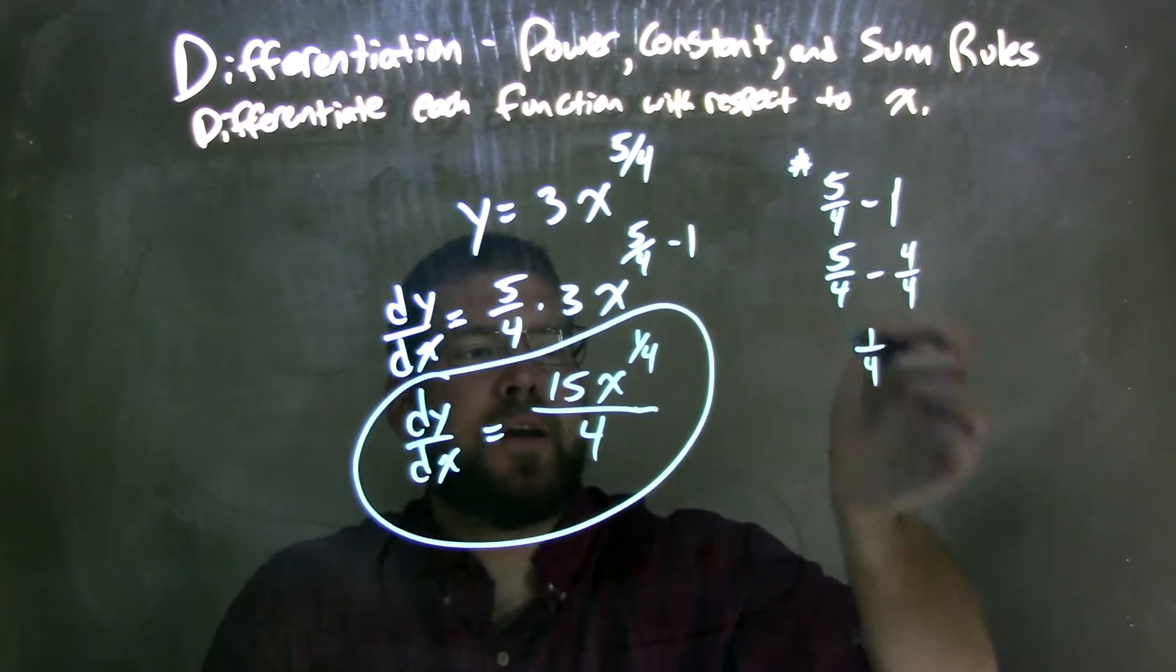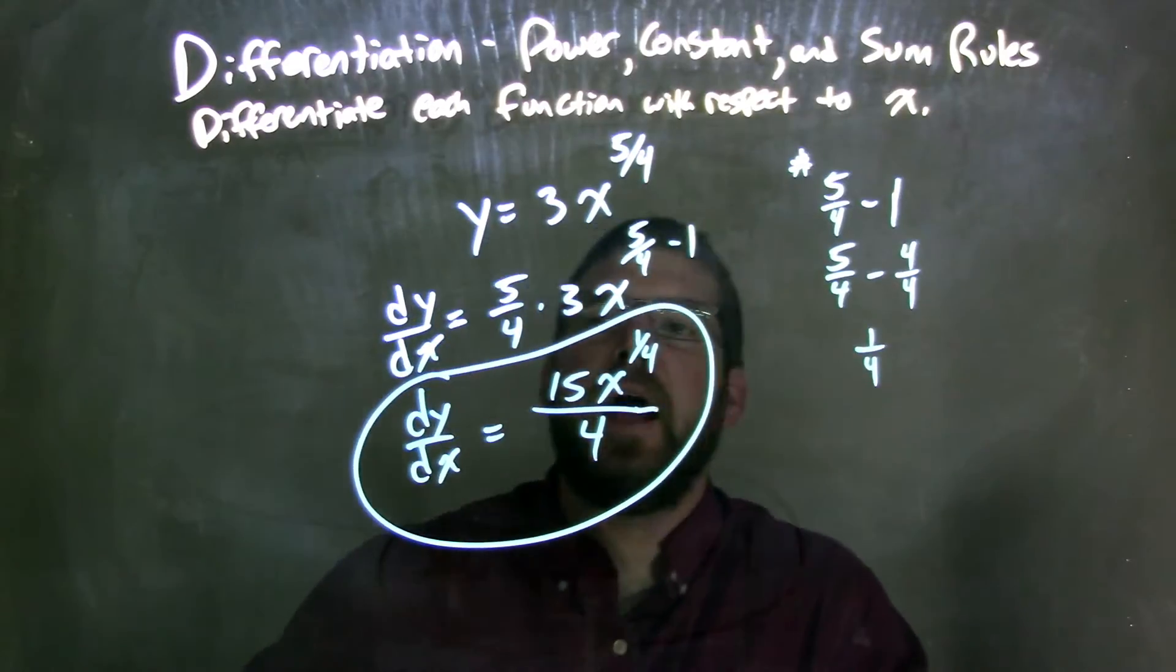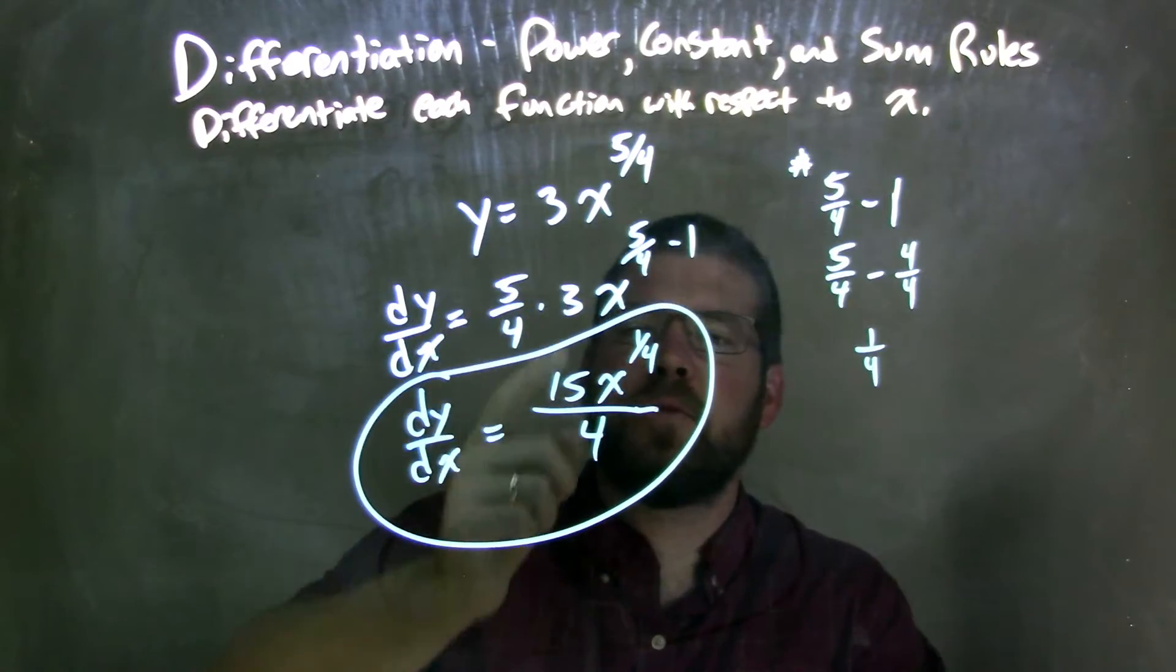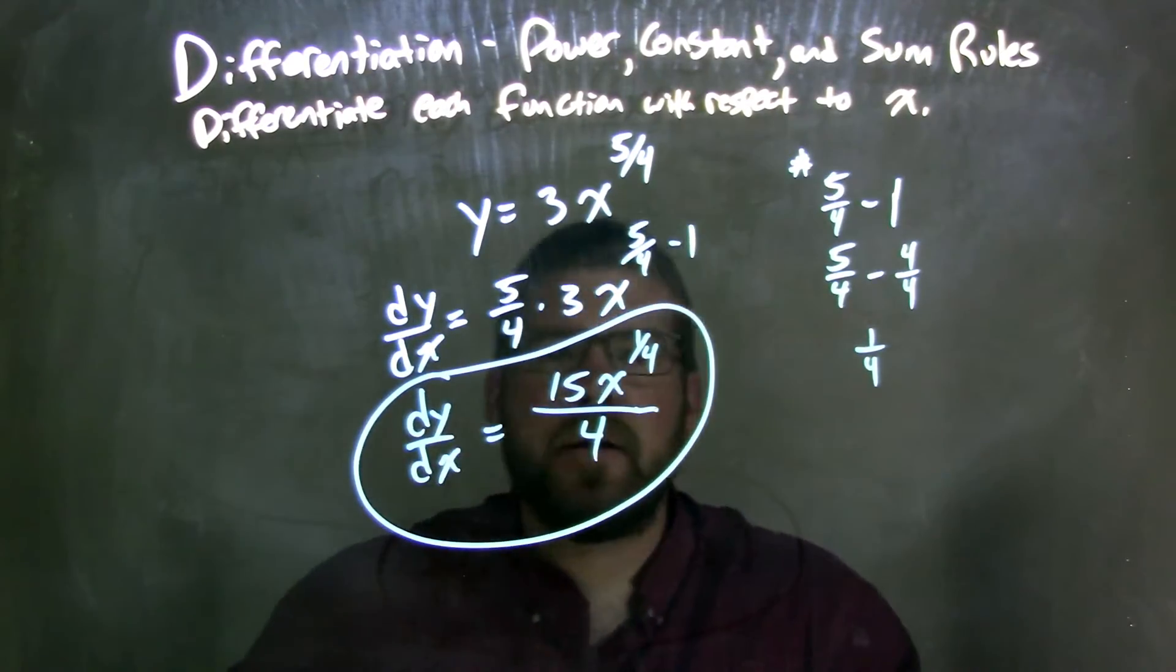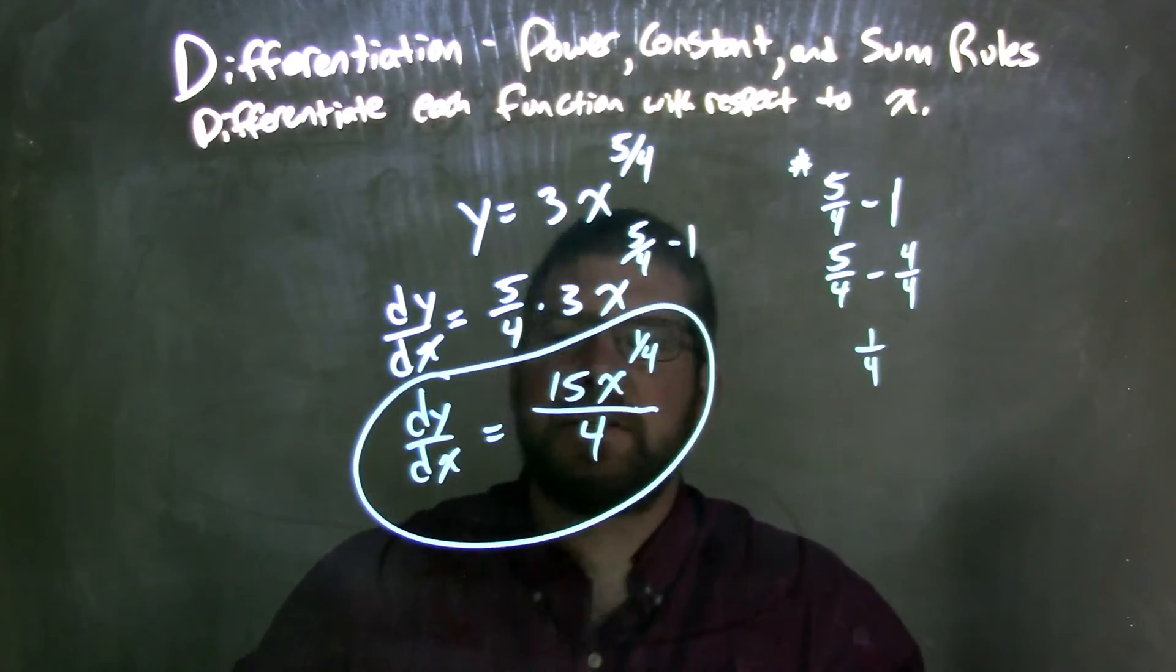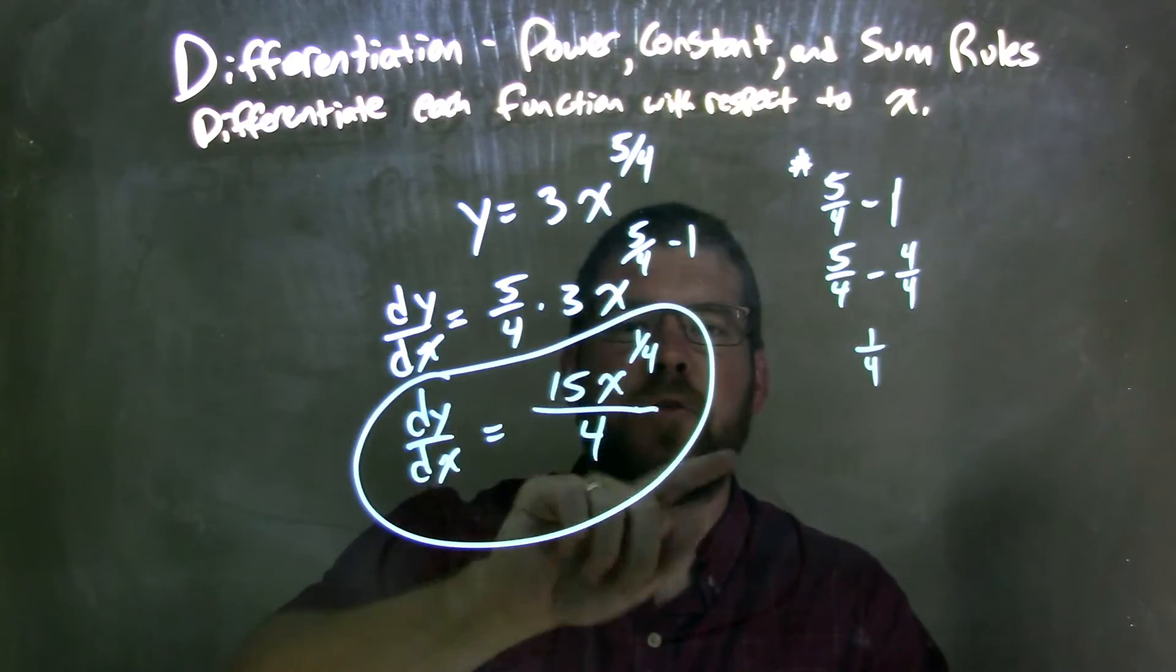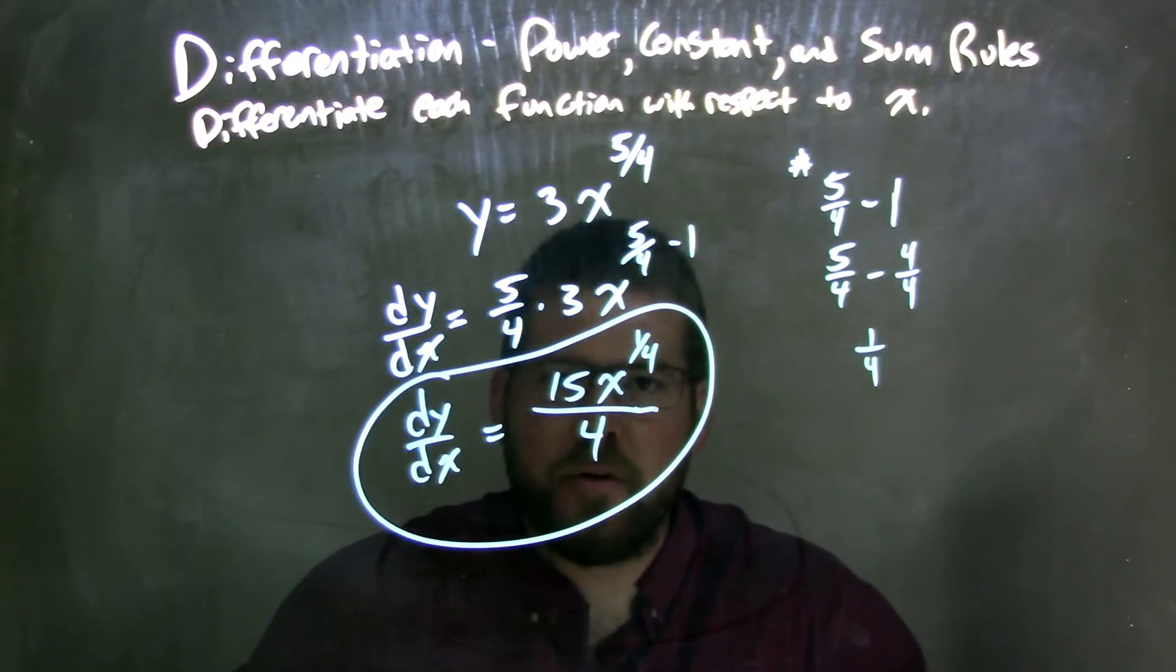5/4 minus 1, show my work here, it's just 1/4. And then 5/4 times 3—5 times 3 is 15, 4 goes down to the denominator, and so now we have our final answer, which is dy/dx is equal to 15x to the 1/4 power all over the number 4.